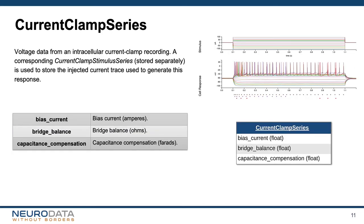Finally, current clamp series extends patch clamp series to store response traces from current clamp experiments. It also stores metadata typical for these types of experiments, including information about any bridge balance adjustments, capacitance compensation, and any bias currents that have been applied.